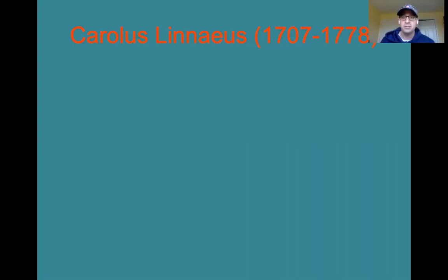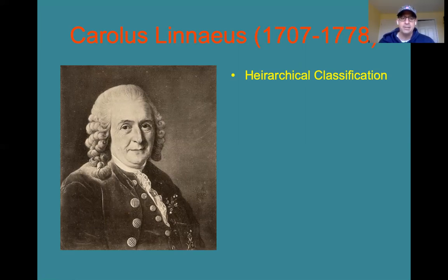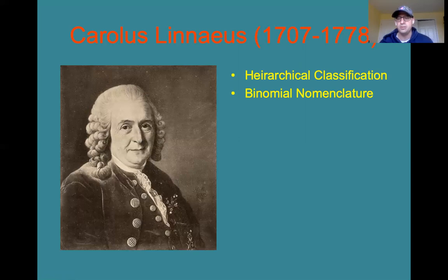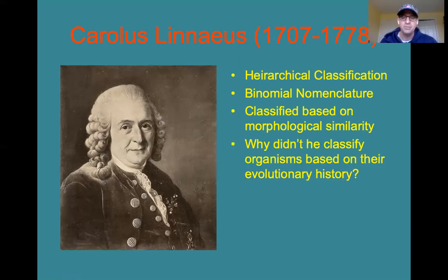We're going to start with Carolus Linnaeus, who lived from 1707 to 1778 — easily considered the father of modern taxonomy. Taxonomy, of course, refers to classification. Linnaeus developed a system of classification called hierarchical classification, which we've taken a look at before. He also developed a system of naming called binomial nomenclature. The way Linnaeus classified organisms was based on their morphological similarity, not their evolutionary history.